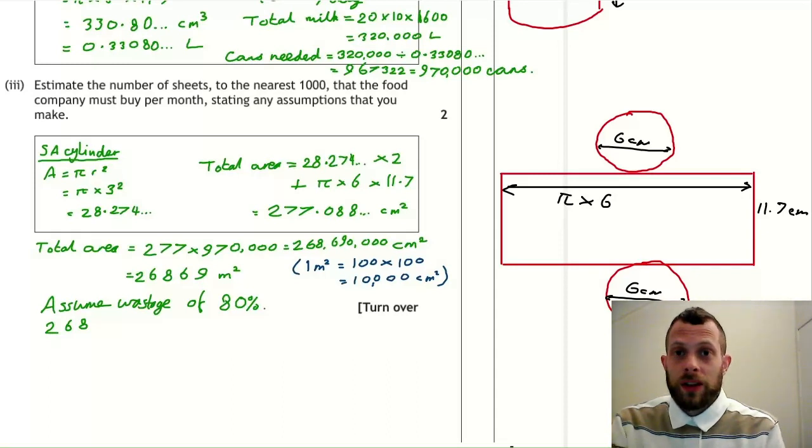Now if we knew how much sheets we had to start with, we'd find 80% of that, and that would give us the total area, the 26,869 square meters. So that 26,869 is what you get after you multiply by 0.8. So how would we go from the 26,869 back to what the larger number is? The number that when you multiply that by 0.8, you get 26,869. Well it's the opposite. So what's the opposite of multiplying by 0.8? Dividing by 0.8. So we divide by 0.8.